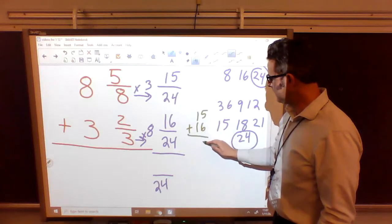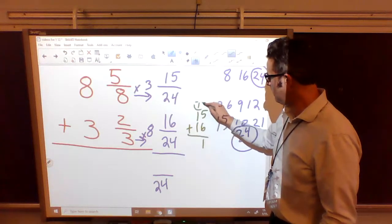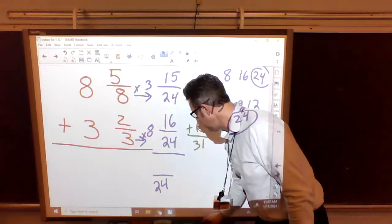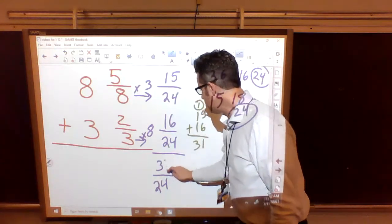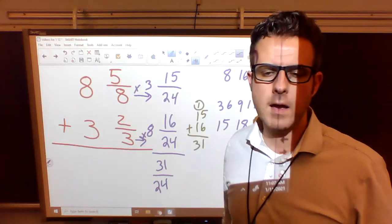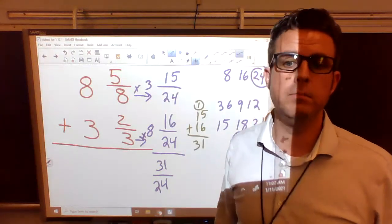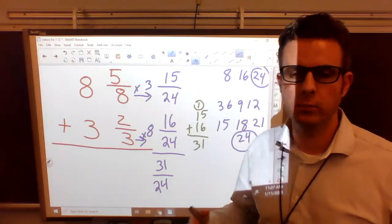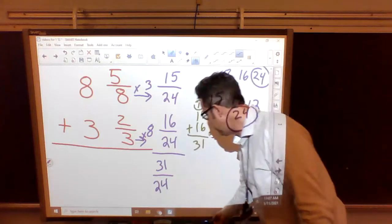Well, 5 plus 6, that's 11. Regroup my 1. 1 plus 1 plus 1 is 31. So we have 31 over 24. Oh, that's top heavy. The top number is bigger than the bottom number. It is called an improper fraction. We need to fix that. We can't leave it as improper.